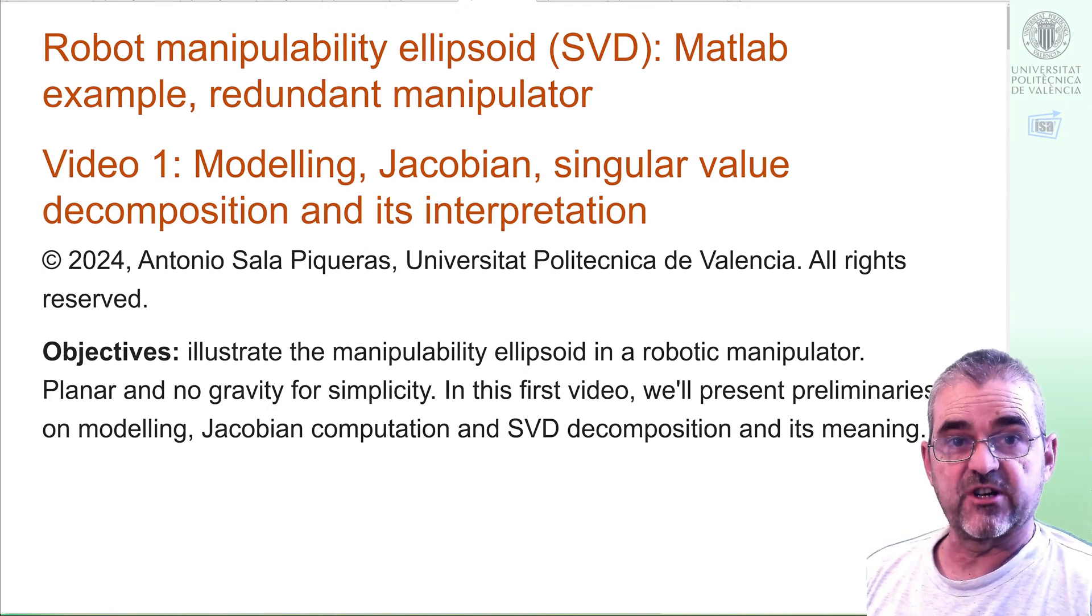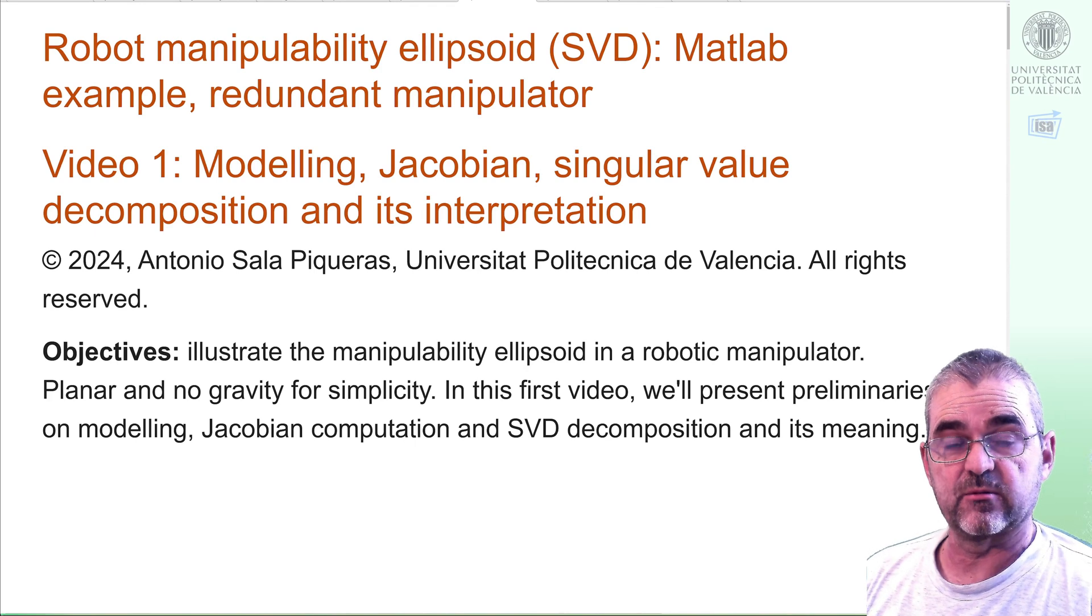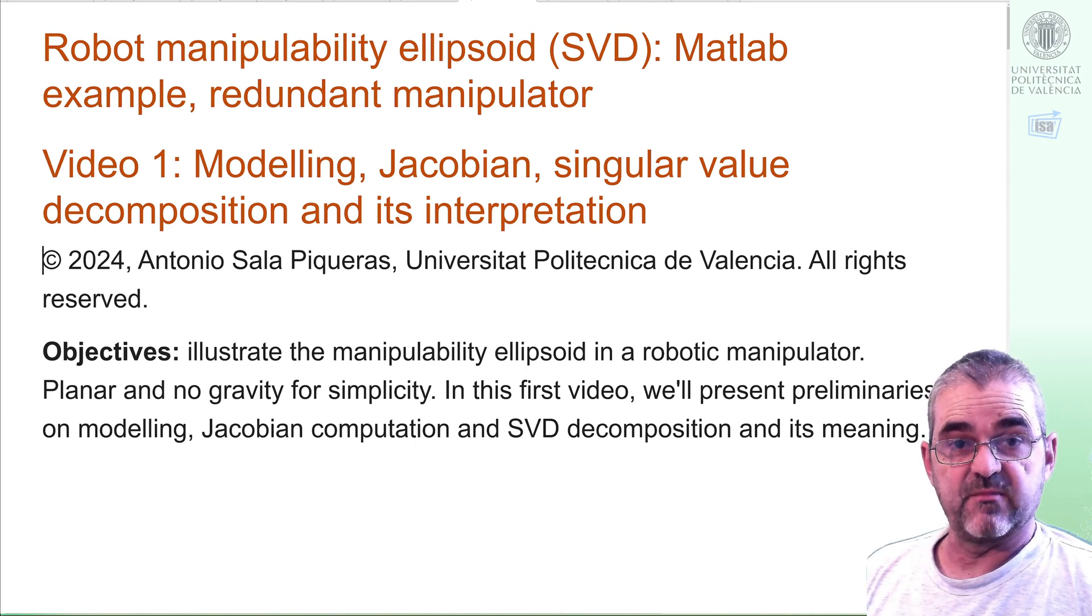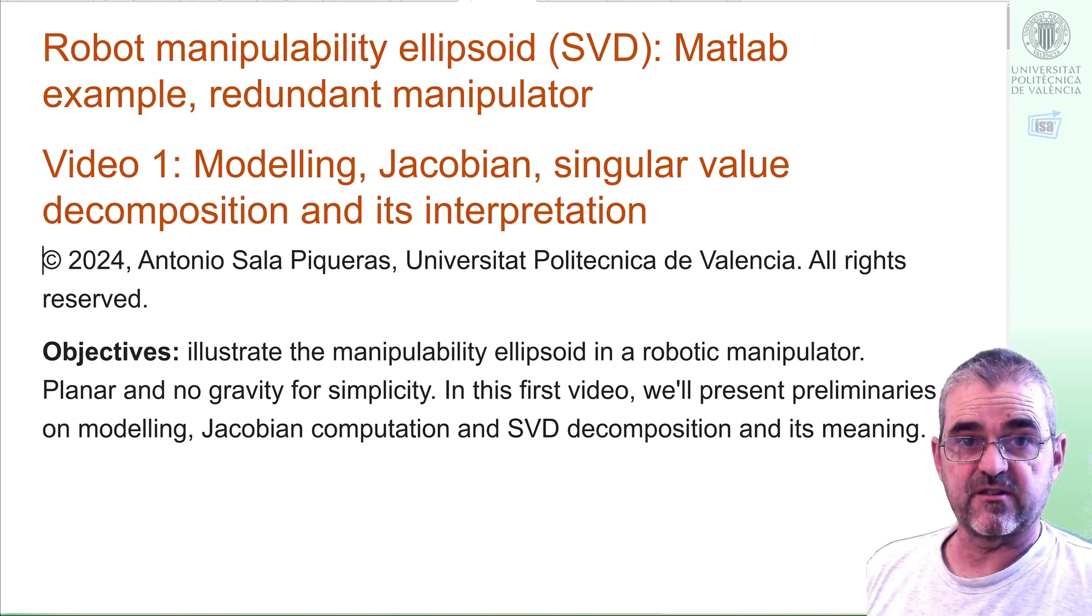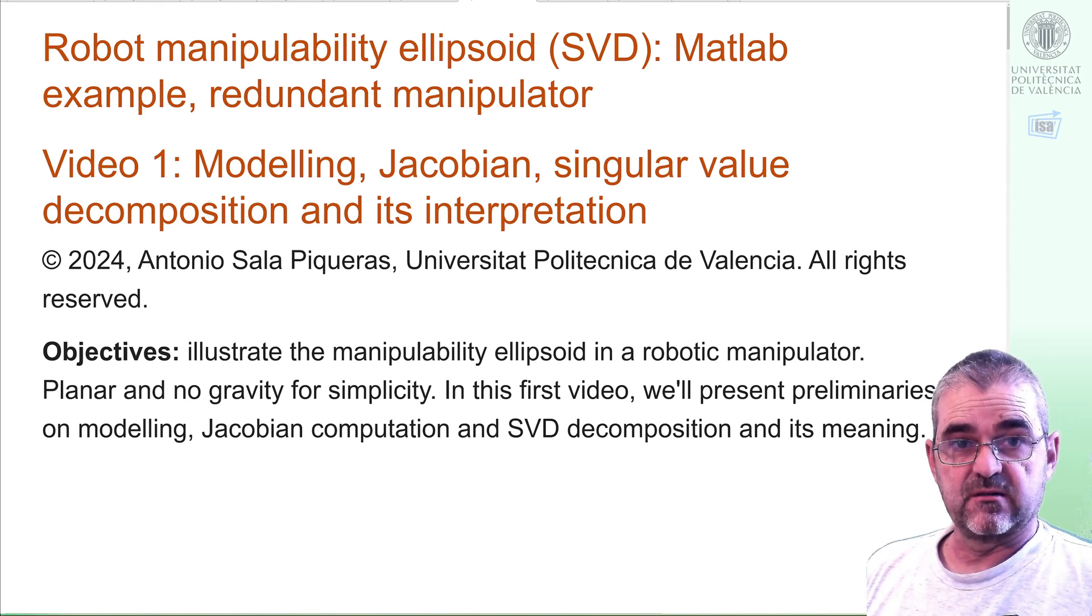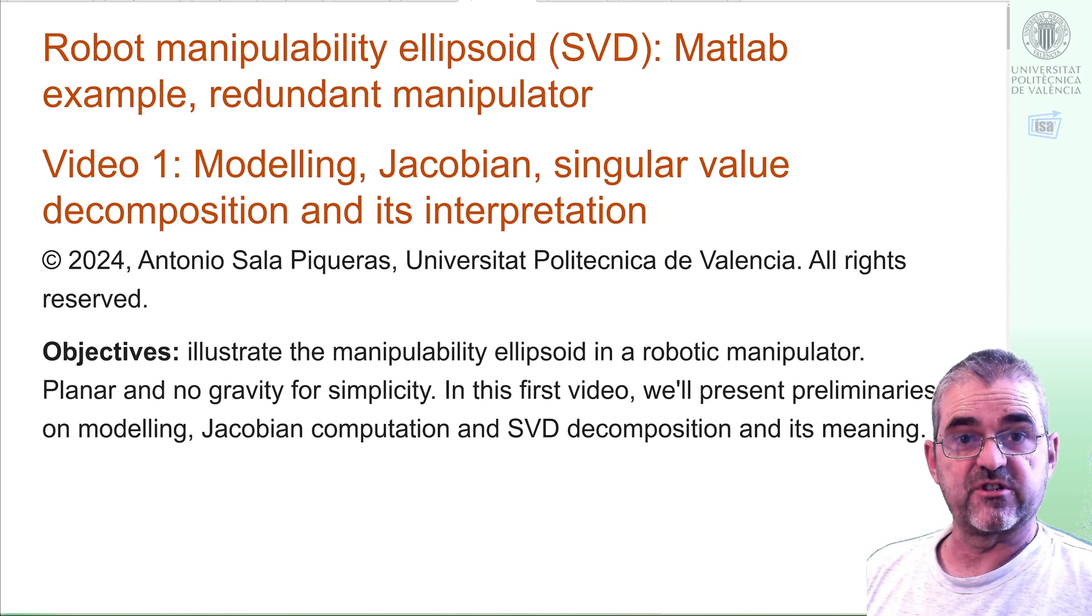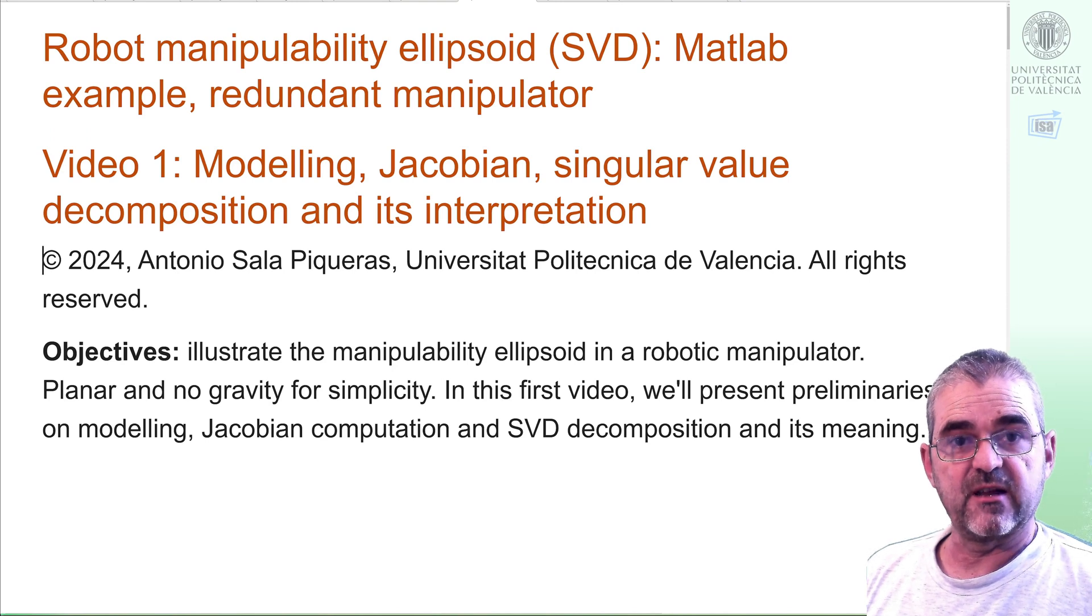For simplicity we'll stick to a MATLAB example of a planar robot with no gravity, but the ideas can be generalized to other configurations. In this first video we'll discuss robot modeling, the meaning of the Jacobian, and the interpretation of the singular value decomposition of such Jacobian. In forthcoming videos we'll define the manipulability ellipsoid and carry out further simulations and animations.